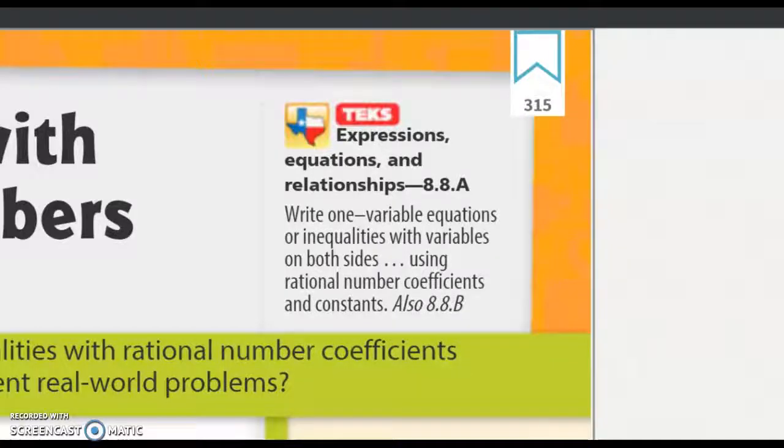Hello everybody, it's Mr. Moore again. Today we're going to be talking about TEKS number 8.8a, which is, as you see there on the screen, writing one variable equations or inequalities with variables on both sides using rational number coefficients and constants.